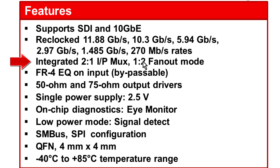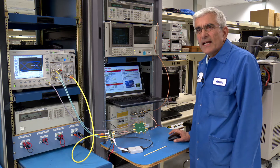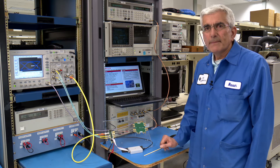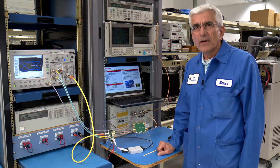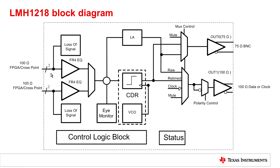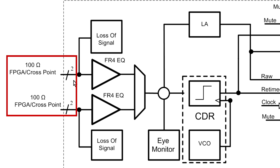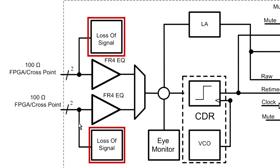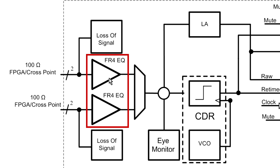Also, LMH 1218 has a two-to-one input mux and one-to-two fan out on the output drivers. Please allow me to now go through the block diagram of the device. LMH 1218 has a 200 ohm differential input followed by a loss of signal indicator on each input and FR4 equalization that the user sets.